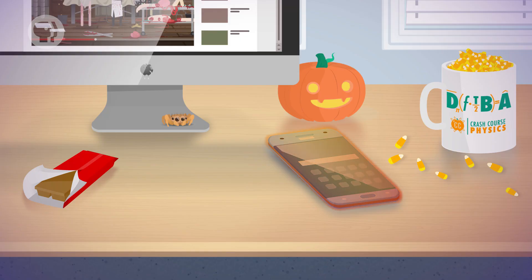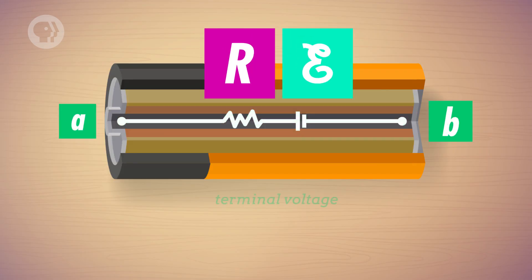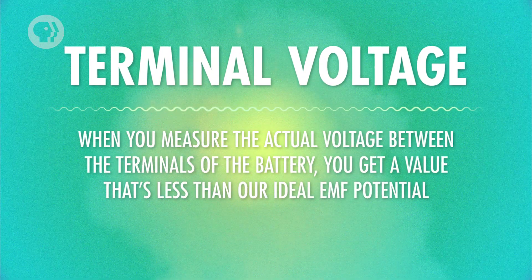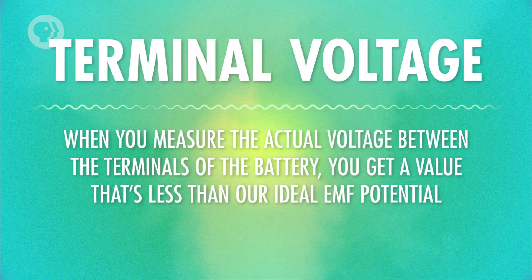While a battery's purpose is to provide a steady voltage, its inner workings still contain conductive materials that will naturally lose energy as heat — like when you watch Crash Course on your phone for three hours and it gets warm. That heat is partly caused by the components inside the battery having resistance. And you know that when there's resistance in a flow of current, power will be drawn and released, often in the form of heat. In a circuit, you model this effect as an internal resistance between the battery's terminals. So when you measure the actual voltage between the terminals of a battery, you get a value that's less than our ideal EMF potential.